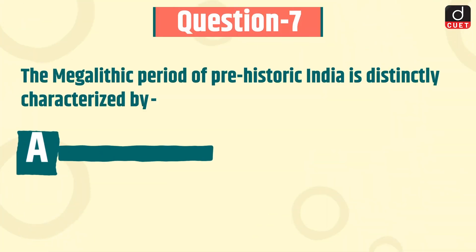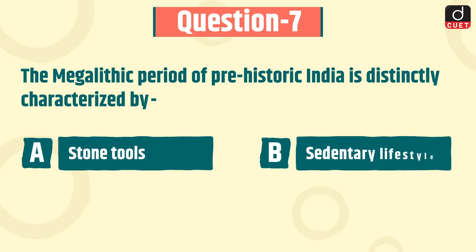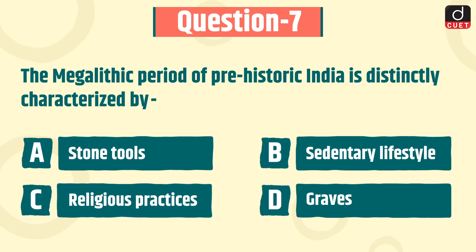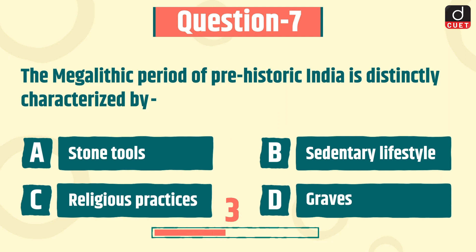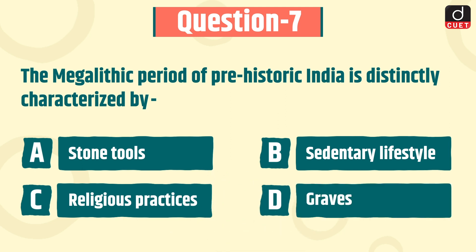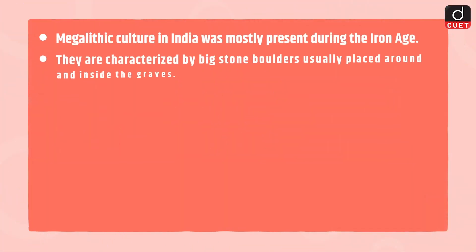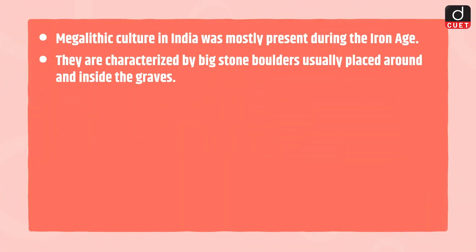The next question is: the megalithic period of prehistoric India is distinctly characterized by which of the following? Stone tools, sedentary lifestyle, religious practices, or graves? The correct answer is option D, graves. Megalithic culture in India was mostly present during the Iron Age and is characterized by big stone boulders, usually placed around and inside the graves.